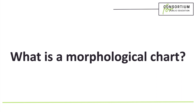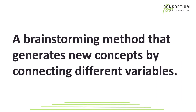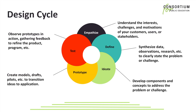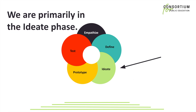So what is a morphological chart? A morphological chart is a brainstorming method that generates new concepts by connecting different variables. If you're wondering where a morphological chart might fit in the design cycle, today we will primarily be talking about the ID8 phase.